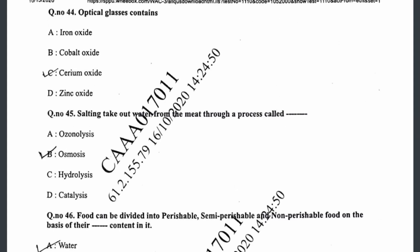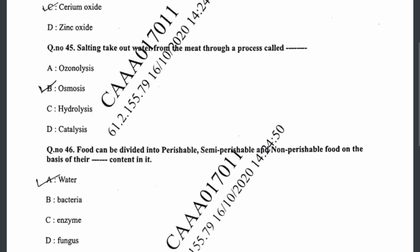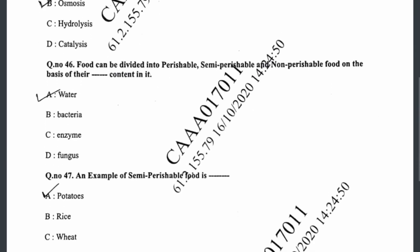Question forty-four: optical glass contains cerium oxide. Question forty-five: salting draws out water from the meat through a process called osmosis — that is option B. Question forty-six: food can be divided into perishable, semi-perishable, and non-perishable based on their water content — that is option A.